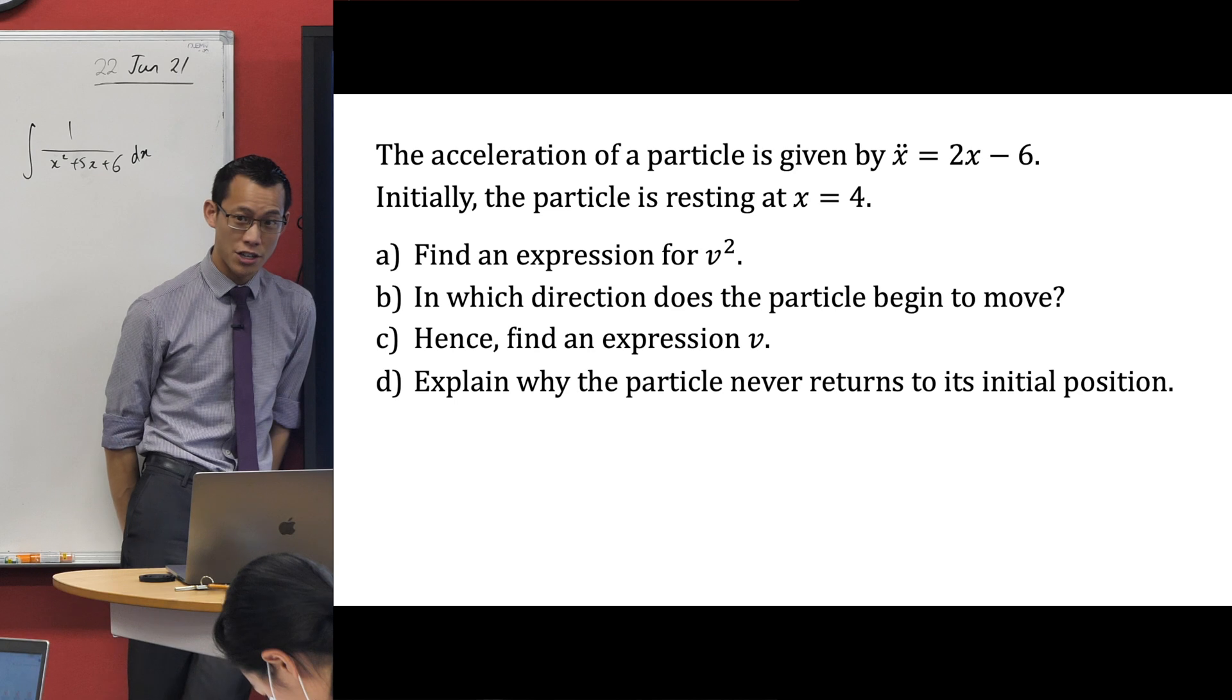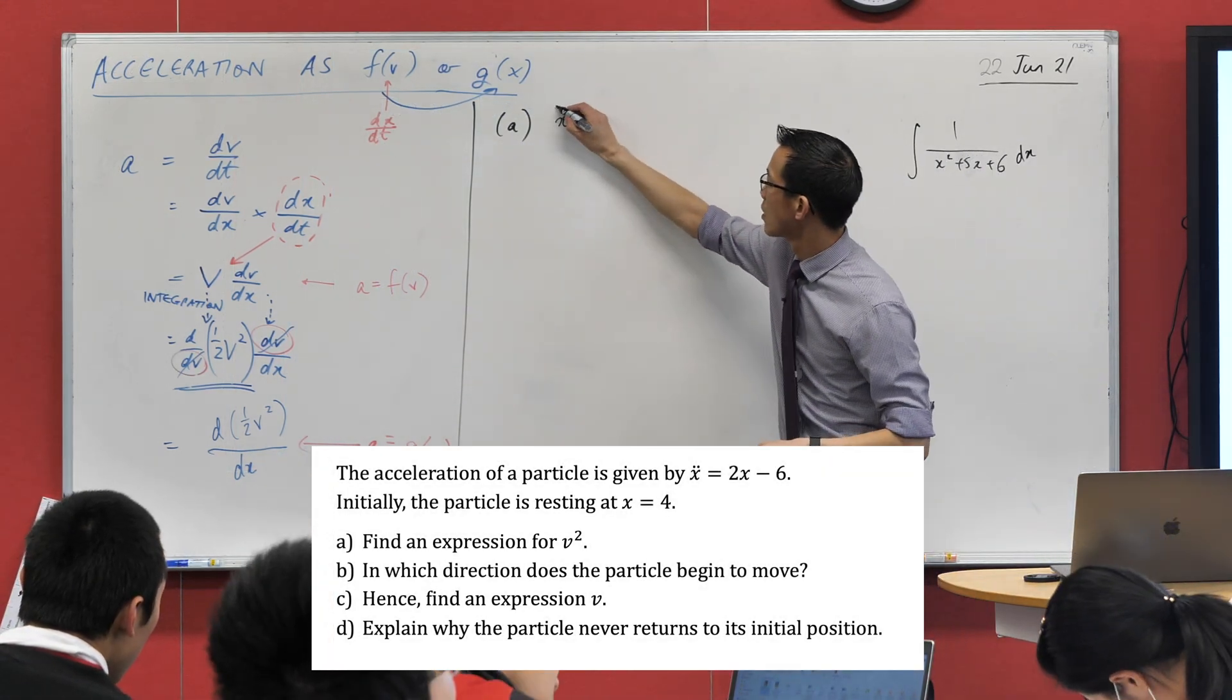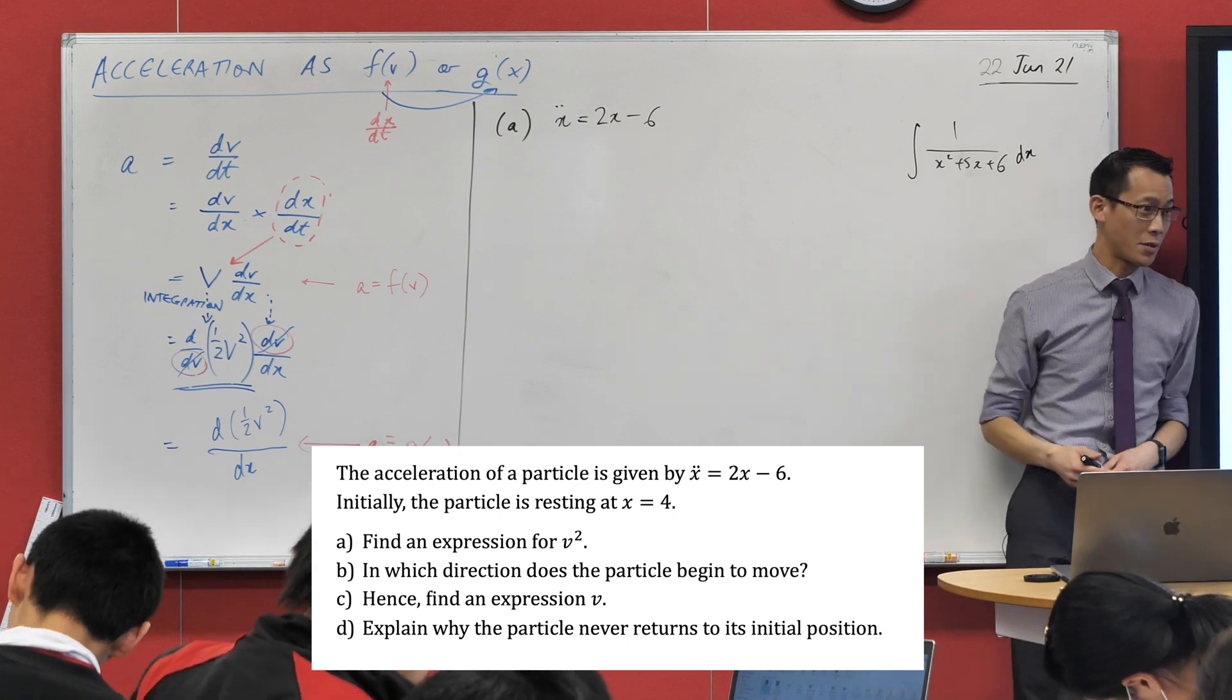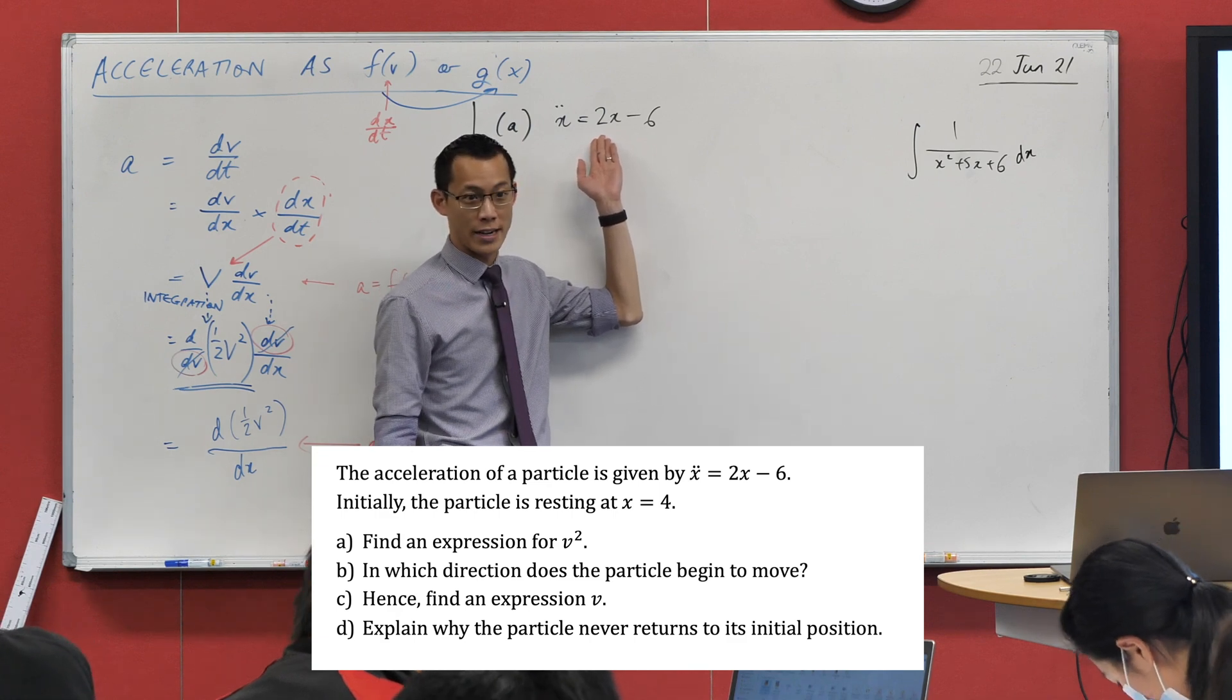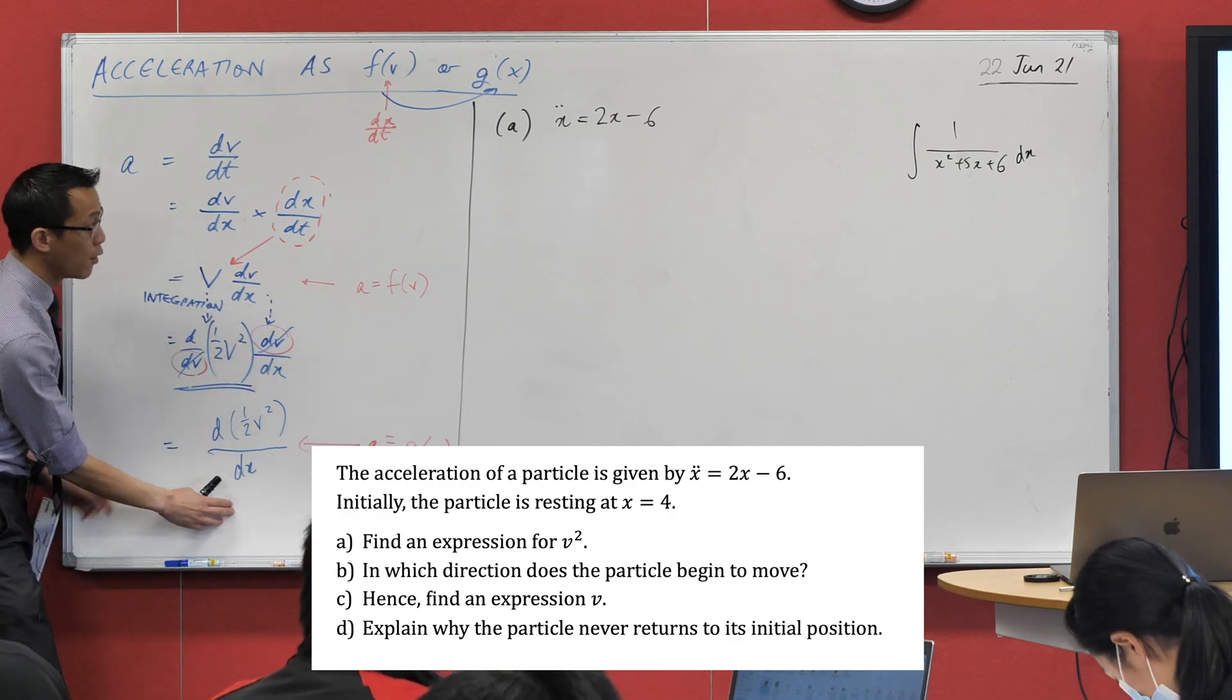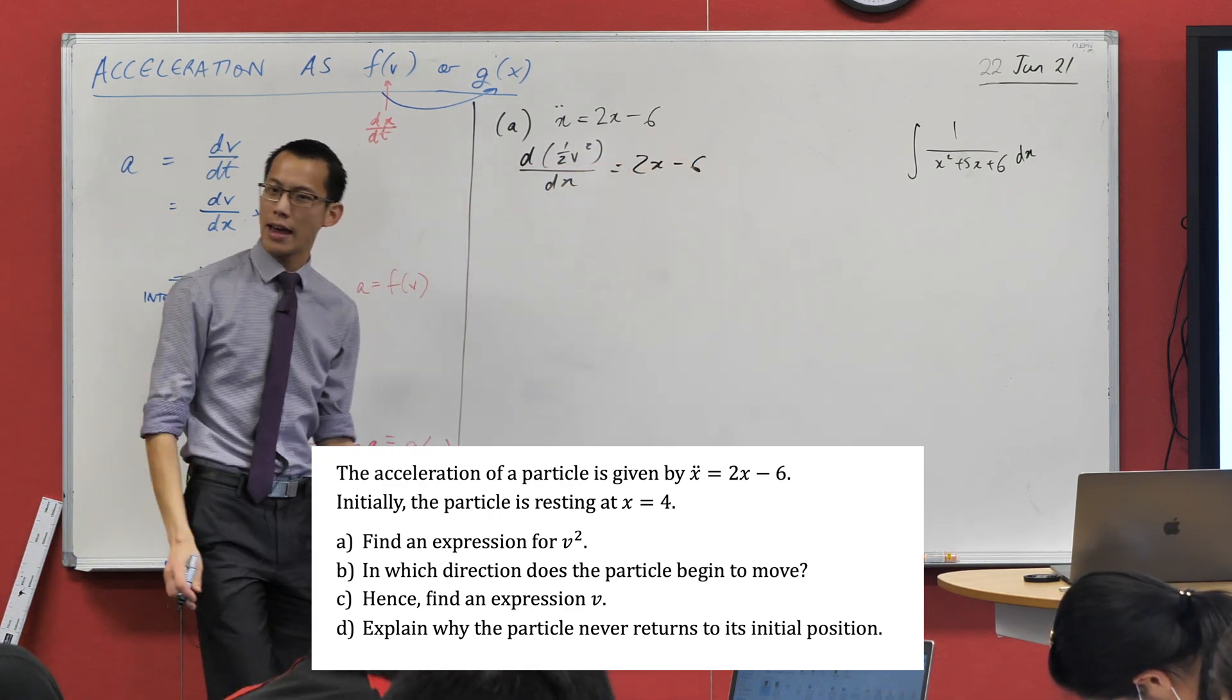So you've got an equation for acceleration. You've also been helpfully given some initial conditions. And then we're going to walk through these parts together. So I'm going to start with my acceleration equation. X double dot equals 2x minus 6. And then the first question is, find an expression for v squared. This is an introductory question guiding you towards use the form for acceleration that has a v squared in it. And also we have the fact that this equation is in terms of displacement already. So all I'm going to do is, off the basis of this result we've just done, I'm going to do a straight substitution of this for x double dot. This is x double dot. It's just a weird way of writing it.